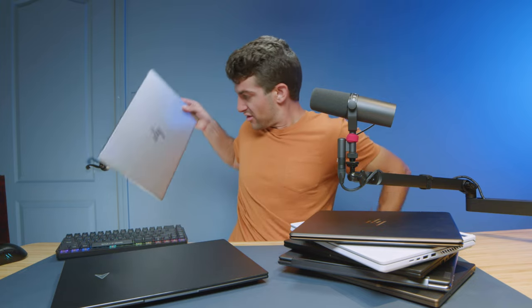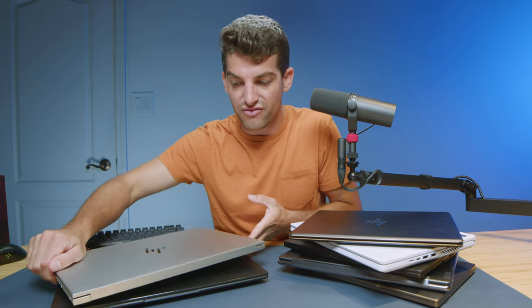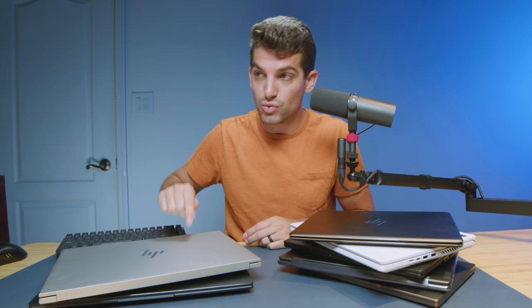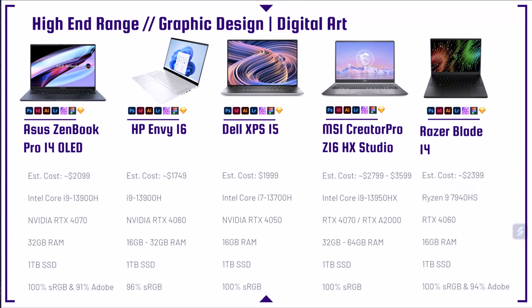Next up, we have the HP Envy 16 — I have one right here. Great performer in Photoshop, InDesign, Illustrator, and also a great performer for video editing or motion design as well. If you're going to get into motion design, I definitely recommend 32GB of RAM for After Effects — After Effects is a RAM hog, so you're going to want enough RAM for that.